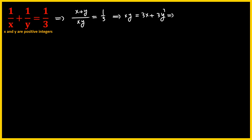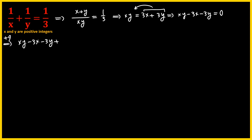Moving terms to the left-hand side, we get xy minus 3x minus 3y equals zero. The next thing I'm going to do is add 9 to both sides — there is a very important reason for that, which I'll explain shortly. Doing so gives us xy minus 3x minus 3y plus 9 equals 9.